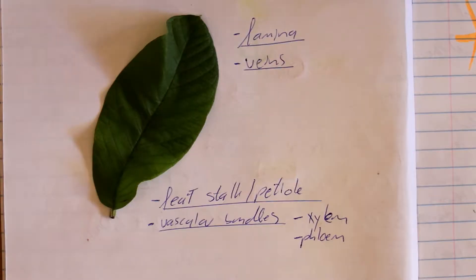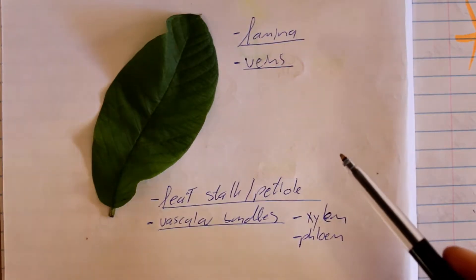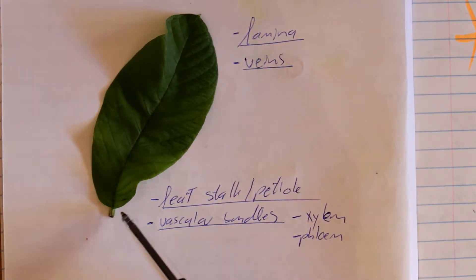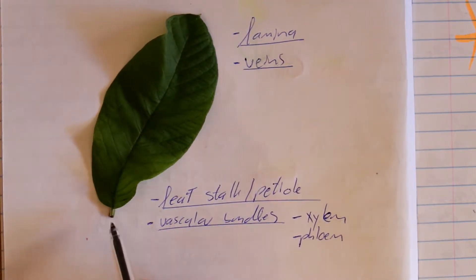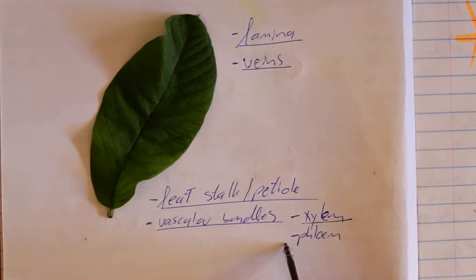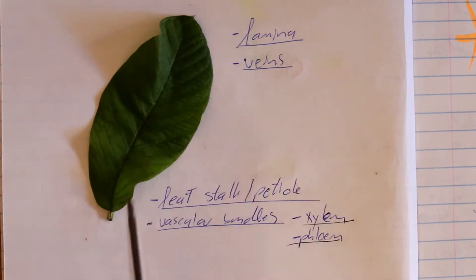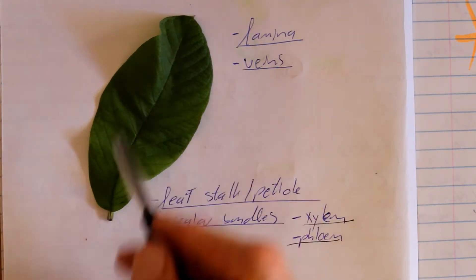Now, these leaves have special adaptations to help with photosynthesis. The leaf is quite broad and held in the air, which exposes it to carbon dioxide. Leaves have a broad flat part called the lamina and a stalk holding the leaf to the rest of the plant. In the stalk, we've got vascular bundles which comprise of your xylem and your phloem, and this is how the plant transports water and sugars around.